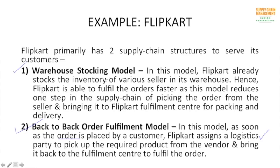In the back-to-back model, the logistics partner is used twice: once to pick the product from the seller and then to deliver it to the customer. To supply products faster, Flipkart introduced the warehouse stocking model, wherein Flipkart stocks inventory from various sellers in its own warehouse. Whenever Flipkart gets an order and the product is available in the warehouse, it is directly supplied from there — completely bypassing the distributors or sellers for that particular order. This makes the whole supply chain faster and helps Flipkart fulfill the customer's need better.